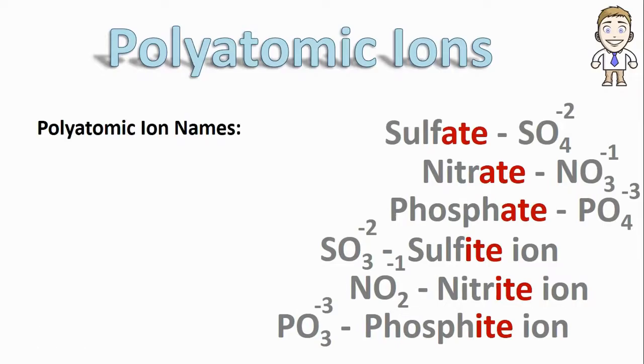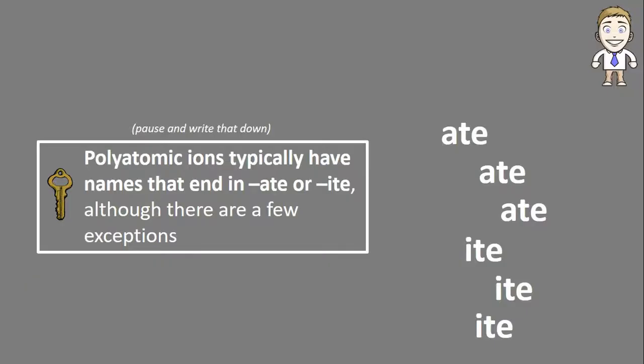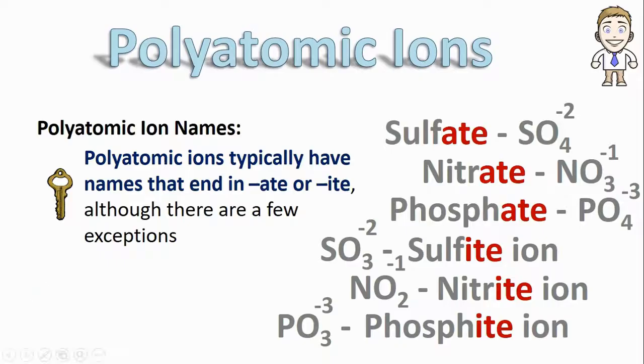The most important thing to notice here is that these polyatomic ions typically have names that end in -ate or -ite, although you will see a couple other examples that are exceptions to this.